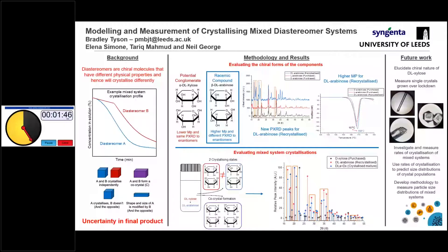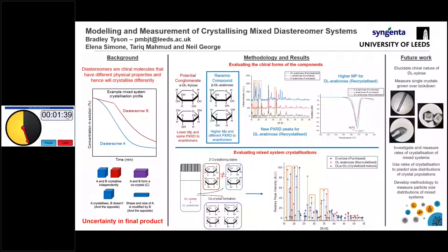The data shown is for our racemic compound of arabanose. We can see that it has a higher melting point as seen by DSC on the right, and also it has a different powder X-ray diffraction pattern because we formed a new solid state. This is actually similar to a co-crystal — you've got both the D and the L units contained within one single crystal.